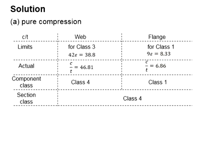Let us try the first condition where the entire section is subjected to compression. The limit for class 3 is 38.8, and the limit for class 1 for flange is 8.33. The actual limits as calculated are 46.81 and 6.86.